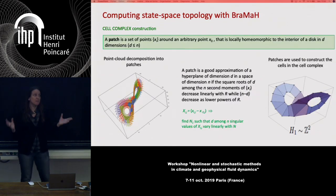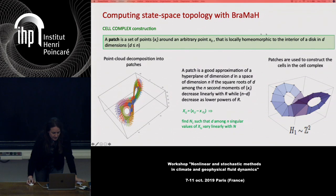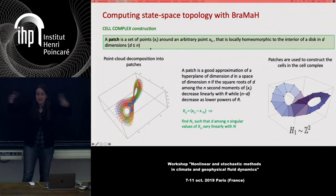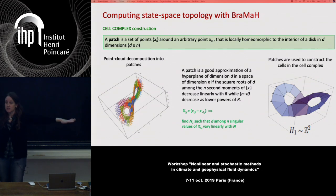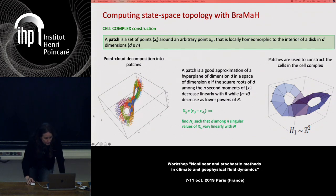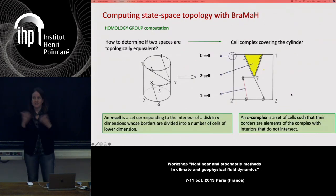What does BRAMA do? The starting point is constructing a cell complex from a point cloud. We introduce the concept of a patch — a set of points around an arbitrary center point that is locally homeomorphic to the interior of a disk in D dimensions, where D is the local dimension. For example, the Lorenz attractor lives in a two-dimensional local dimension in 3D state space. Covering the point cloud with these patches, we can associate patches to cells in a cell complex in the sense of algebraic topology.